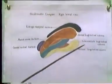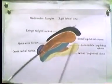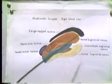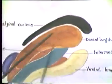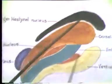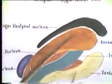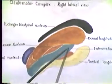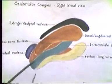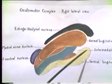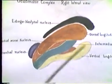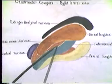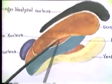Here you see the oculomotor complex — what parts the nucleus is made up of. Here is the Edinger-Westfall part. Here is the dorsal longitudinal part, which innervates the inferior rectus muscle. Then the intermediate part, which innervates the inferior oblique muscle. Then the ventral longitudinal part, which innervates another muscle. Medial to that is the red-colored zone that innervates the superior rectus.